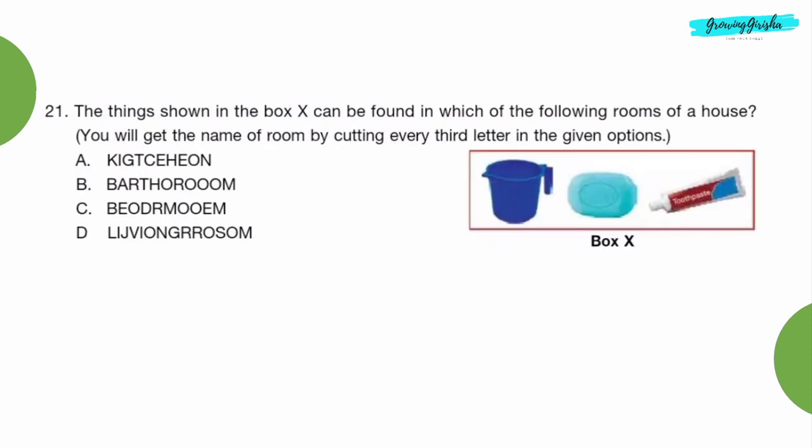Question 21: The things shown in the box X can be found in which of the following rooms of a house? You will get the name of room by cutting every third letter in the given options. Option B, bathroom.